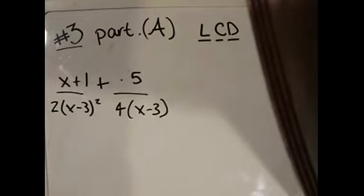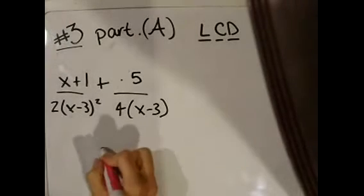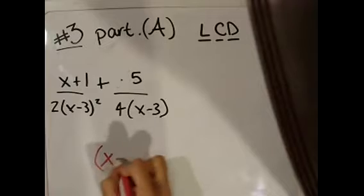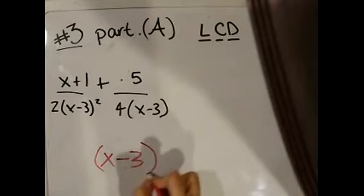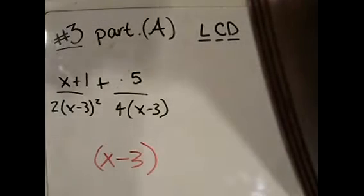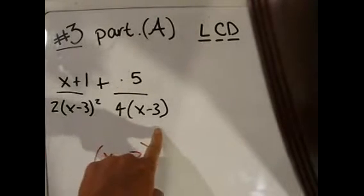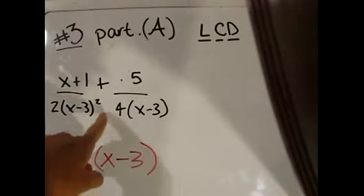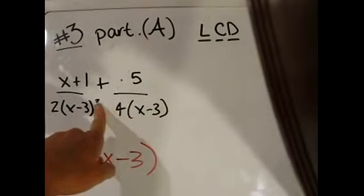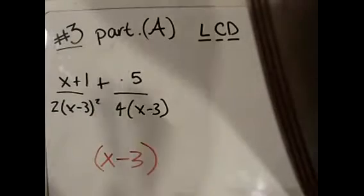Something they both have in common is the x minus 3. They both have x minus 3, but this number has two of them, so you must take all.